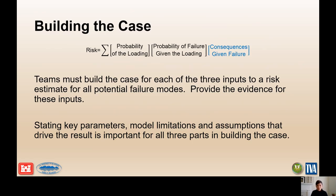How we arrange evidence should follow the formula for risk: the probability of the loading, the probability of failure given the loading, and the consequences given that failure. We should be building the case for each component of that formula, and we don't want to skip any portion. We tend to be really good at building the case for probability of failure given loading, but don't forget that the other two components are just as important.